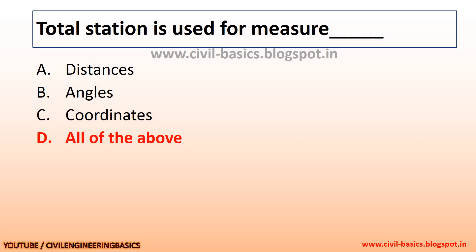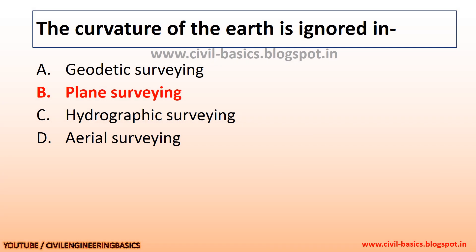Total station is used to measure distances, angles, and coordinates. The curvature of the earth is ignored in plane surveying.